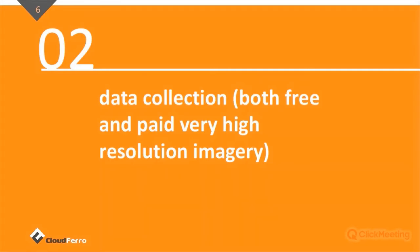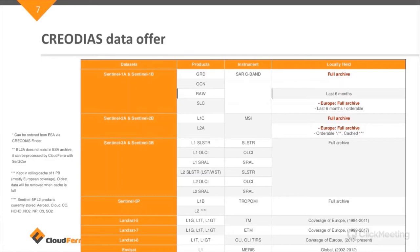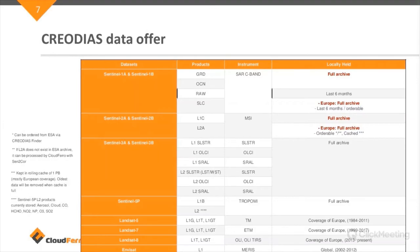Now let's talk about the data that we are collecting. We have both free and paid high-resolution imagery. The free data is collected from ESA — European Space Agency — hubs: Sentinel-1A, 2A, 3A, Sentinel-5P, also Landsat 5, 7, 8, and NOAA/AVHRR. Depending on the products, some of them are full archive, some are stored for six months and then deleted from our repository, but you can order all the data using our tools.